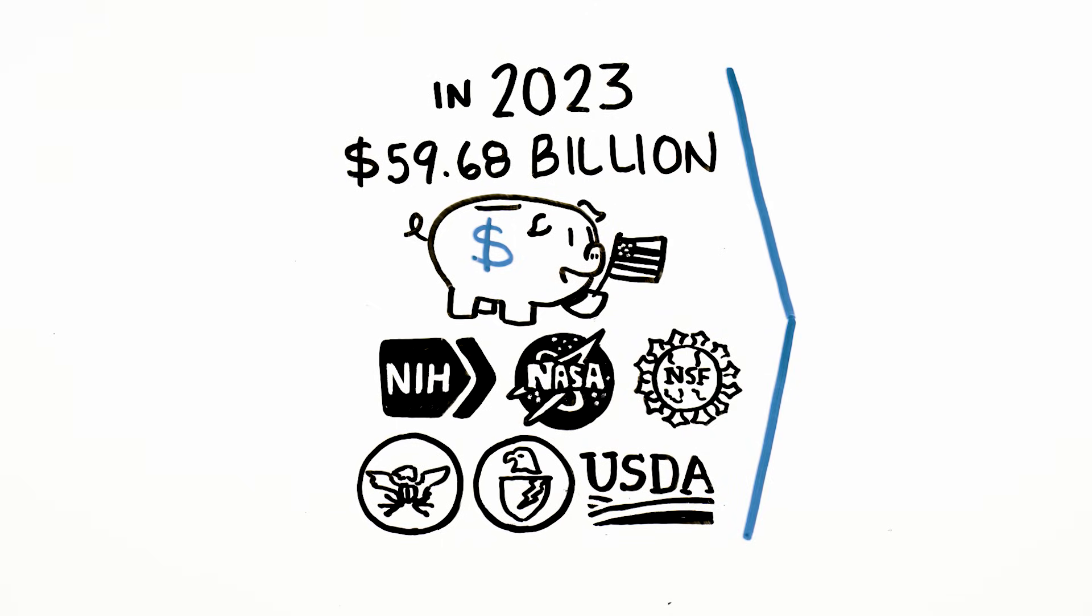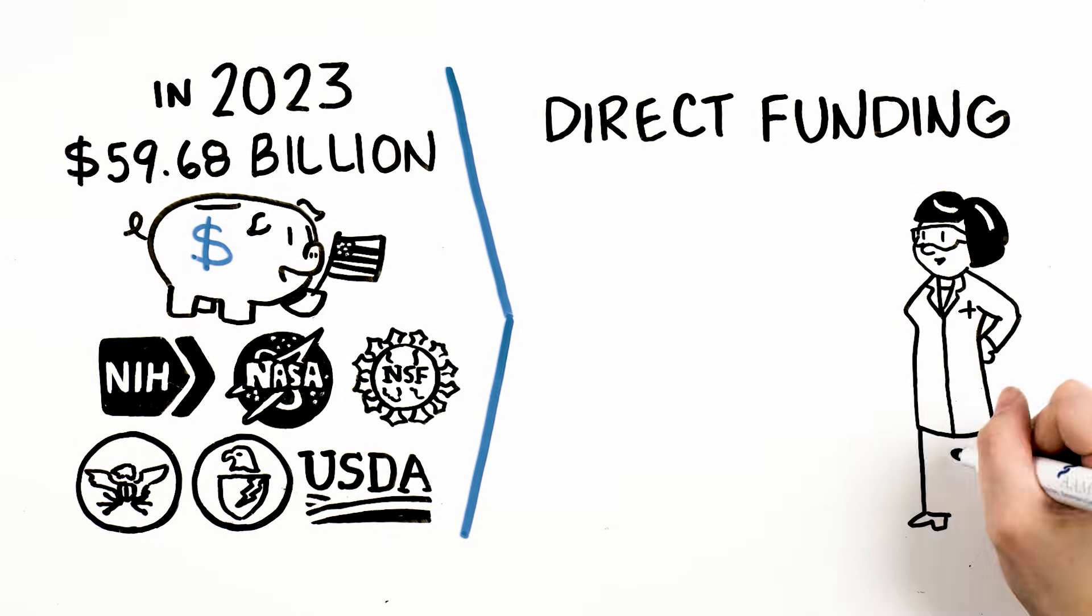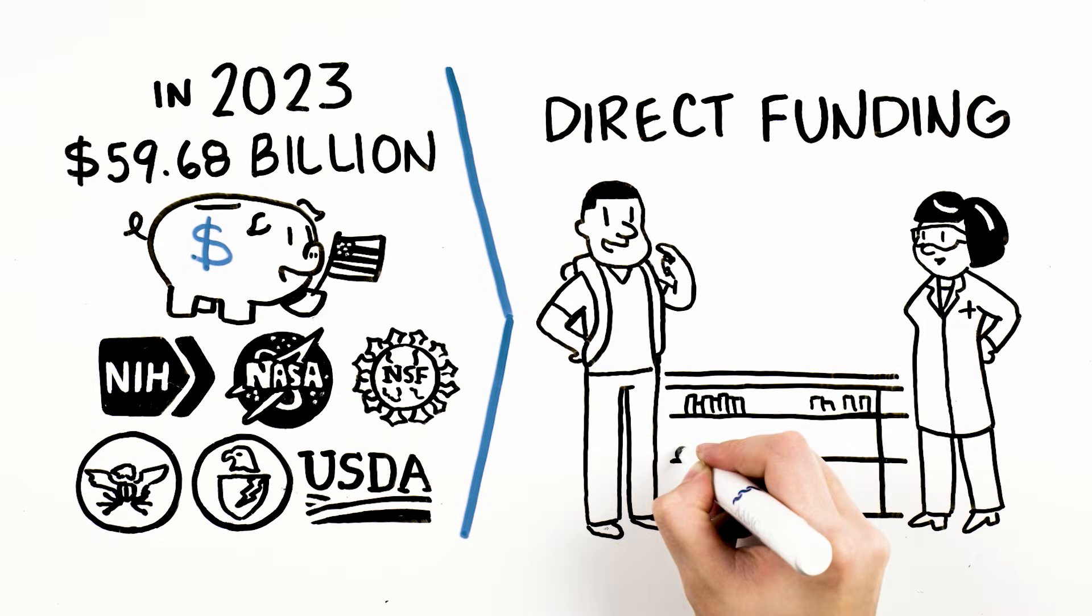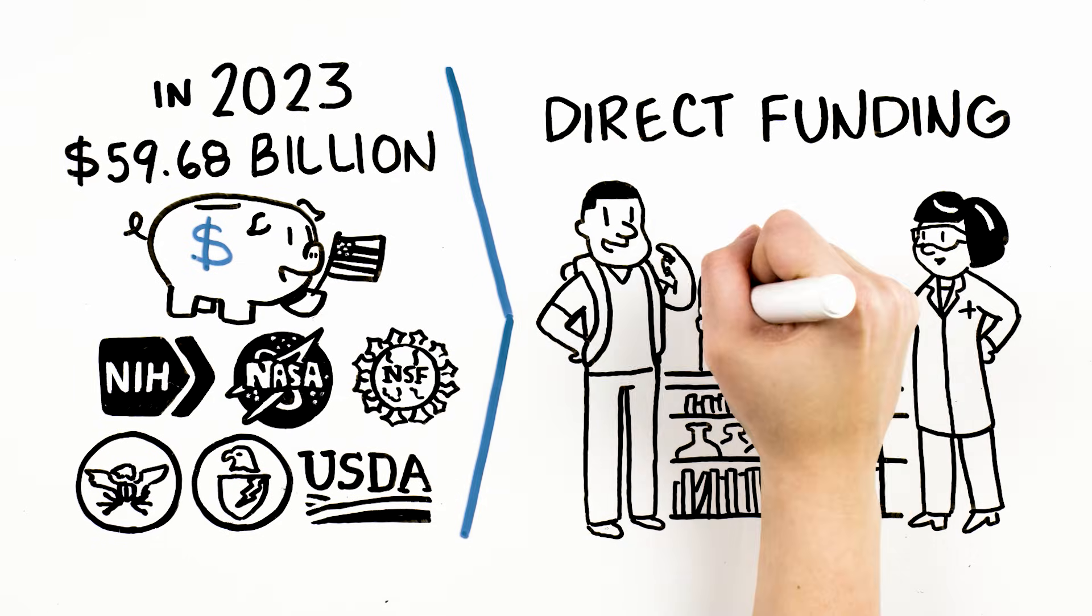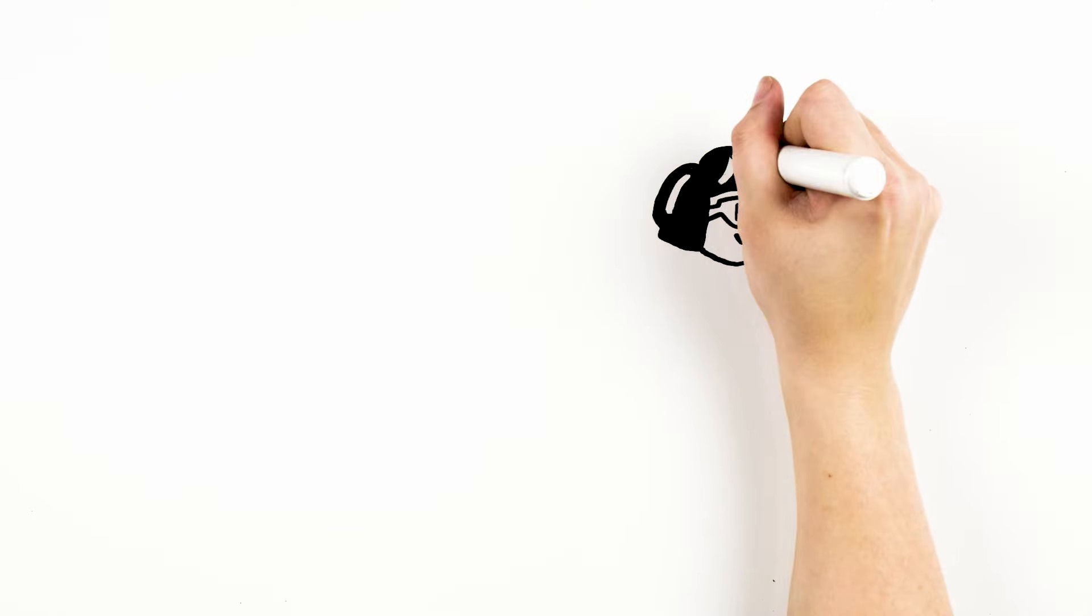This funding comes in two forms. The first is direct funding. Direct funding pays for research personnel salaries, supplies, project-specific equipment, and other costs specifically associated with performing and sharing research. Second,